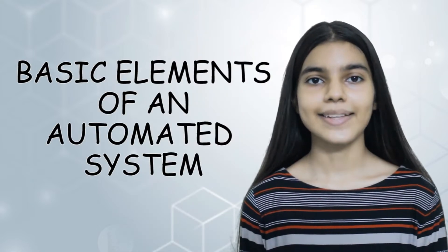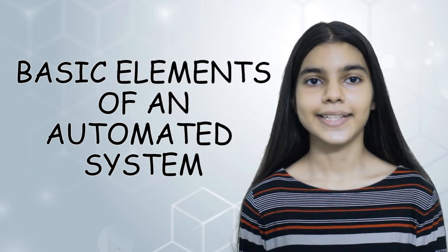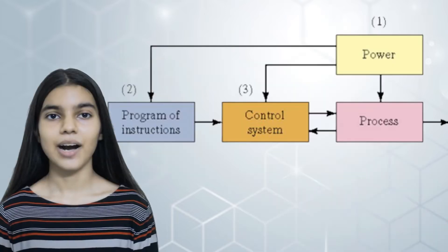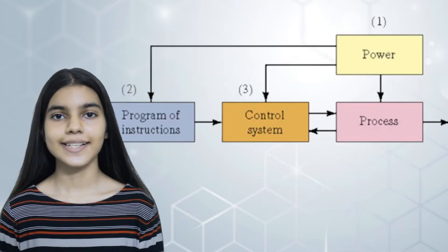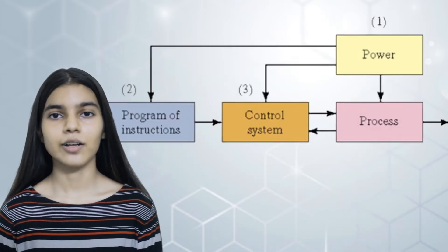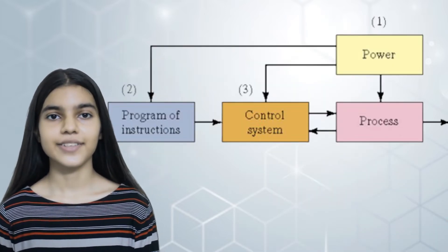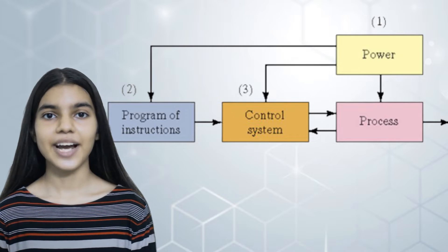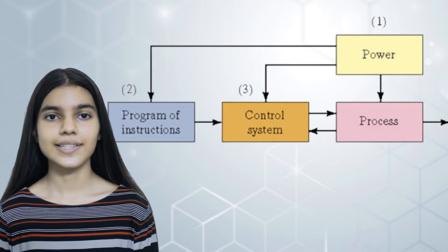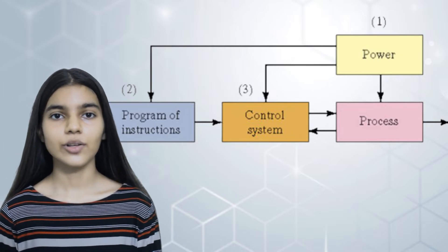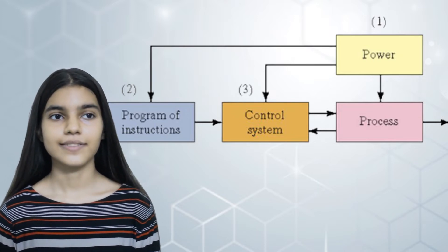Basic elements of an automated system: Power — to accomplish the process and operate the automated system. Program of instructions — to direct the process. Control system — to follow the instructions.